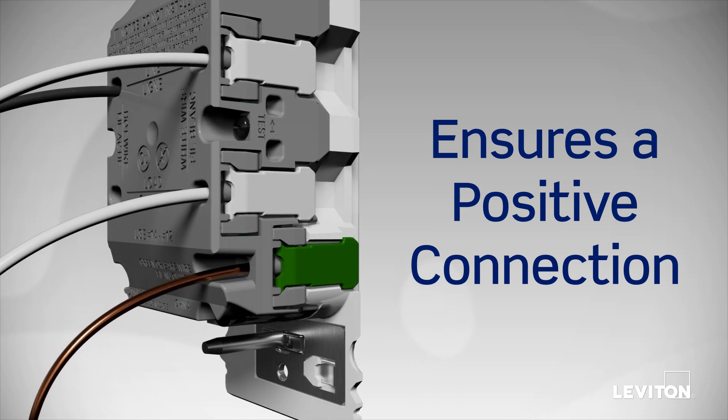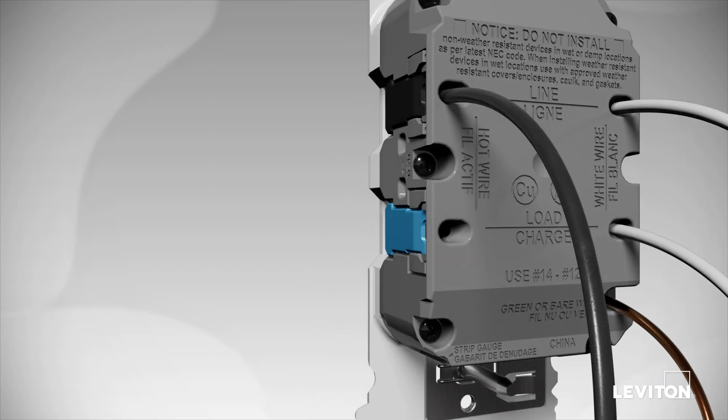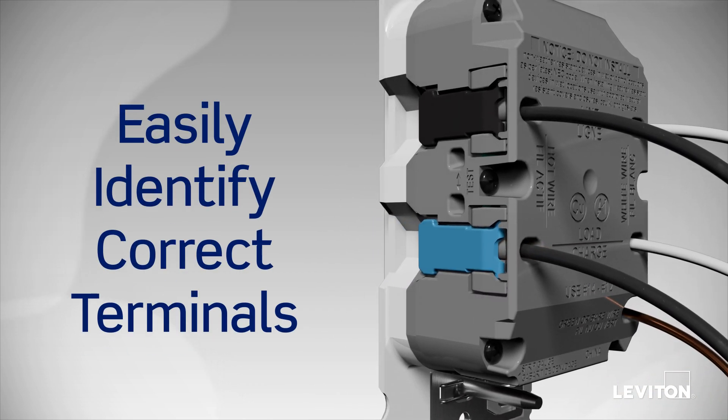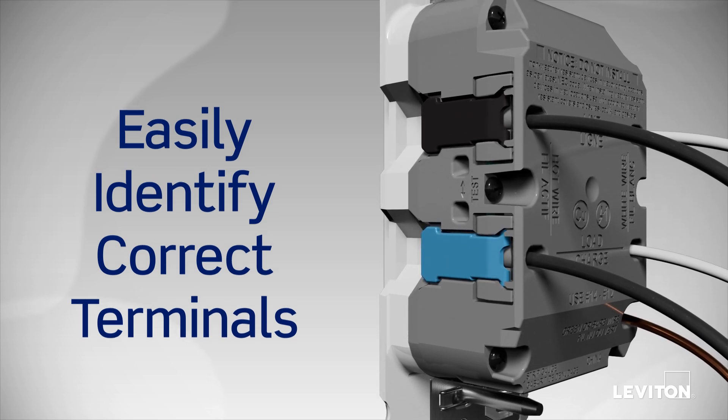The device has individual color-coded levers for neutral, ground, and hot. The blue lever is for the load wire and is specifically designed to help installers easily identify and distinguish between line and load terminals.